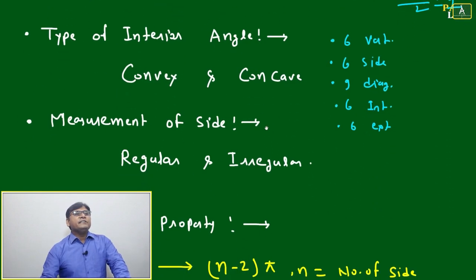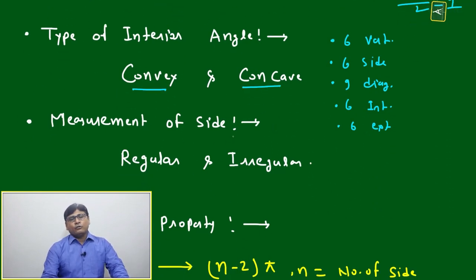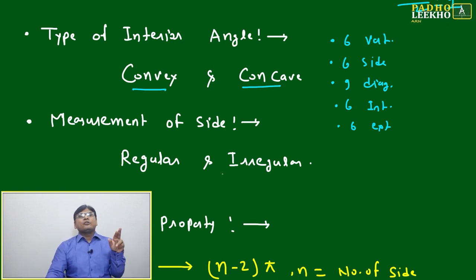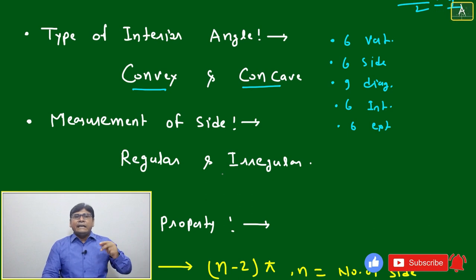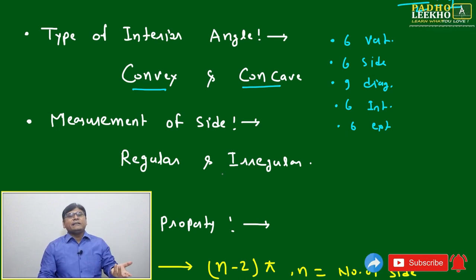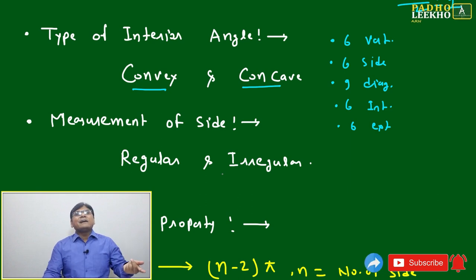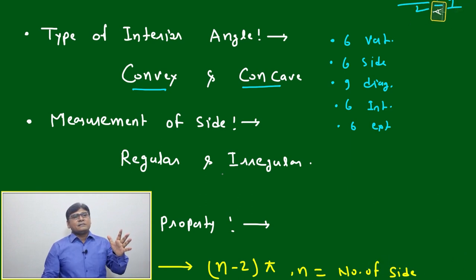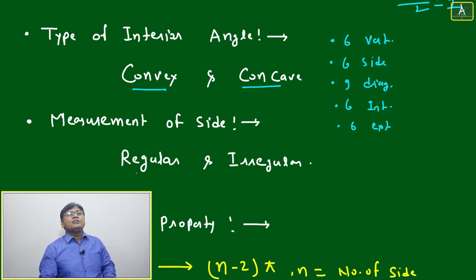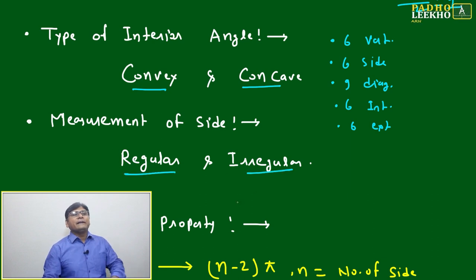Now, types of polygon based on interior angles: convex and concave. The difference is — if any interior angle is more than 180 degrees, the figure is concave. If all interior angles are less than 180 degrees, it is convex. Based on measurement of sides, we have regular and irregular polygons.